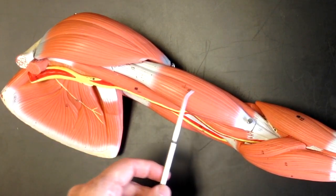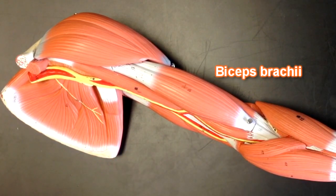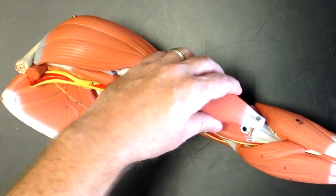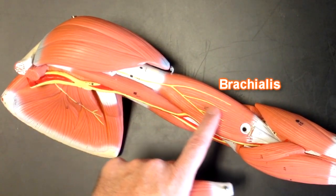This muscle right here is the biceps brachii. Underneath the biceps brachii we would be able to see the brachialis muscle right here.